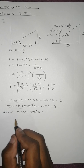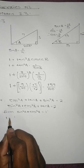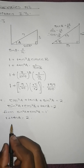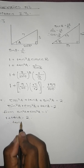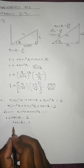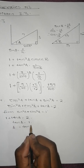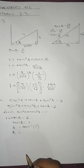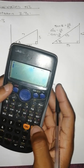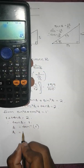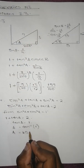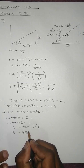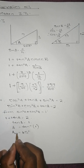From this we get 1 plus tan a equals 2, therefore tan a equals 1, and a equals tan inverse of 1. Punching this into the calculator, tan inverse of 1 gives 45 degrees. This is our reference angle.